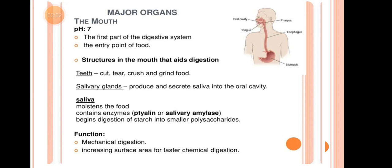Saliva moistens the food. Saliva also contains enzymes — ptyalin and salivary amylase — which begin the digestion of starch into smaller polysaccharides. The digestion process starts as soon as food is mixed with saliva.